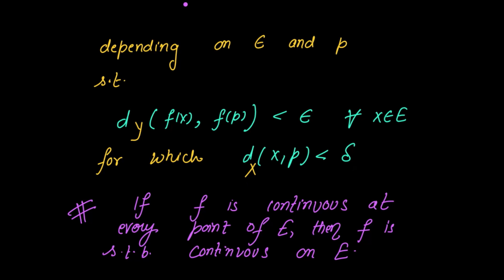Please remember: if the metric distance is less than epsilon, then that distance is in Y, and if the metric distance is less than delta, then that distance is in X. This is about when f is continuous at a point p belonging to E. But if f is continuous at every point of E, then we say that f is continuous on E.